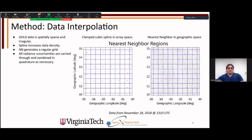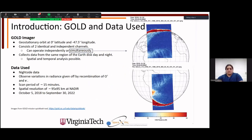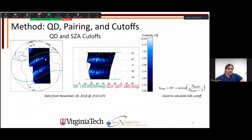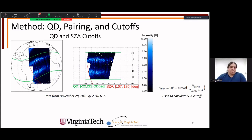Looking at a GOLD image: the sparseness isn't obvious. This image is from the GOLD website; IDL's mapping functions apply a cubic spline automatically, making it look smoother than the raw data. The presenter's pipeline uses IDL mapping for speed and visual quality, though the underlying data points are sparse.